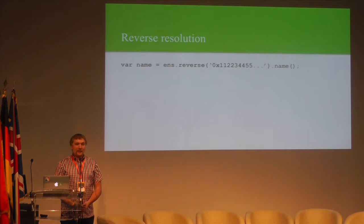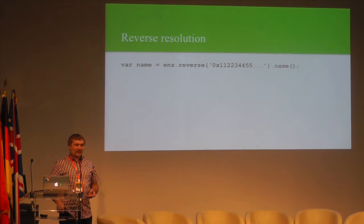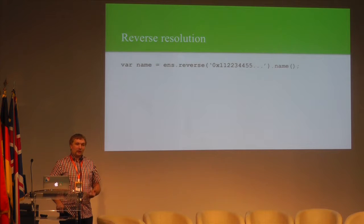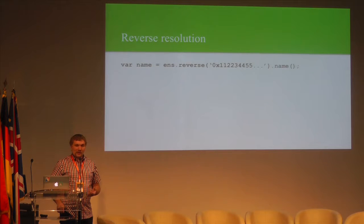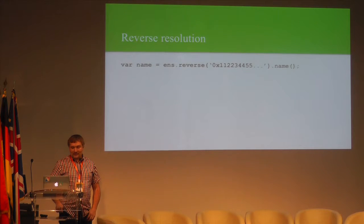Reverse resolution is also possible through ENS. It makes it possible to associate metadata and record information with an Ethereum address. For instance, if you're writing a wallet and your users sometimes enter ENS addresses and sometimes copy-paste a regular Ethereum address, and you want in all cases to be able to show the person's name or other metadata, your wallet can query ENS reverse records to find out what the canonical name for a particular address is. Reverse records can also be used for storing contract metadata.